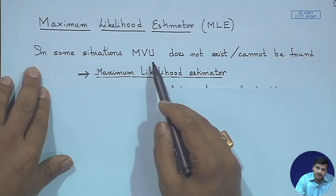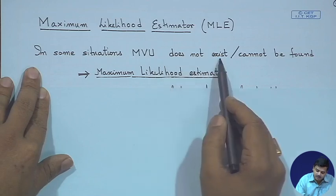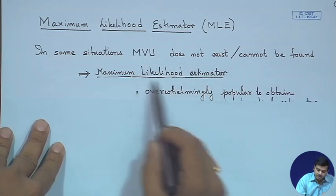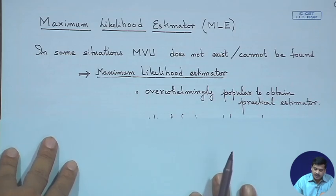The problem is we do not always get the opportunity to factorize the first derivative of the log-likelihood function, leaving us unable to find a good estimator. To our rescue is the maximum likelihood estimator (MLE), which we have already used. In some situations the MVU estimator either does not exist or cannot be found; in those cases the MLE is used. It is a very popular estimator generally used for practical purposes, and you can almost start directly with the MLE.